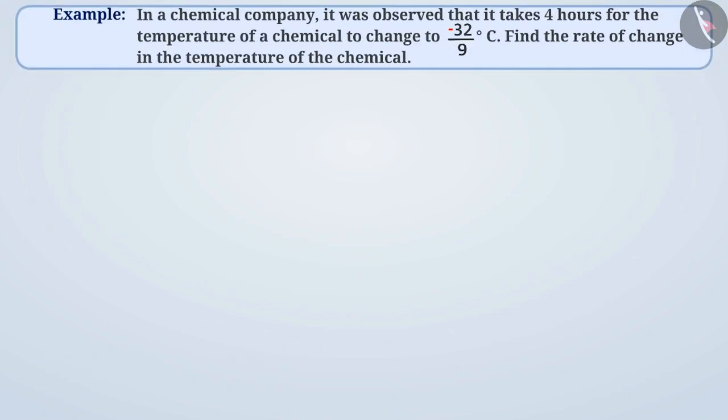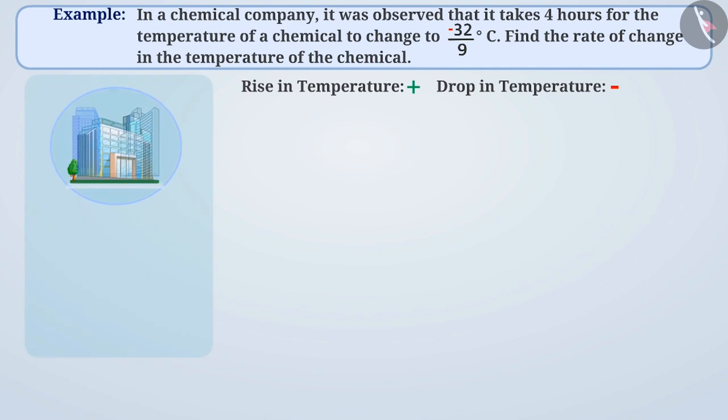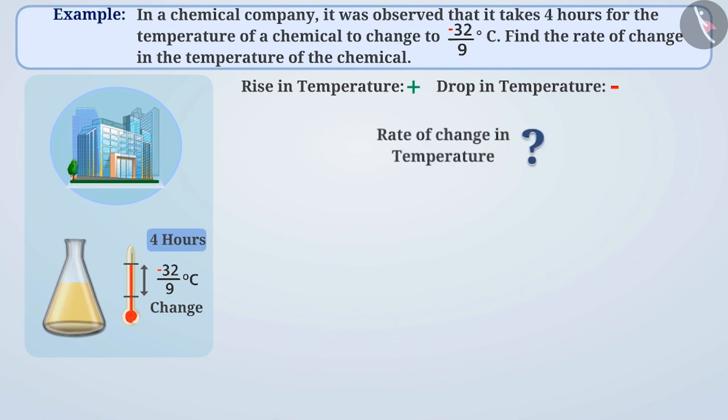Suppose the rise in temperature is expressed by positive rational number and fall is expressed by a negative rational number. In a chemical company, it was observed that it takes 4 hours for the temperature of a chemical to change to minus 32 by 9 degrees centigrade.